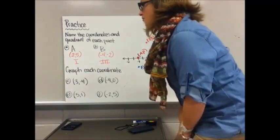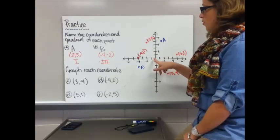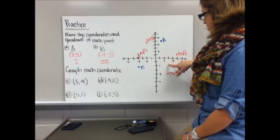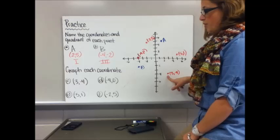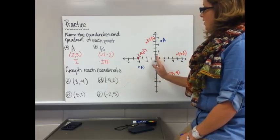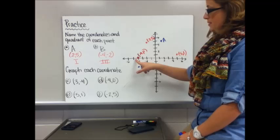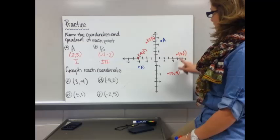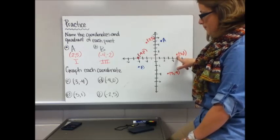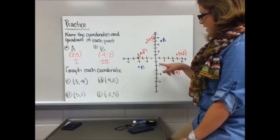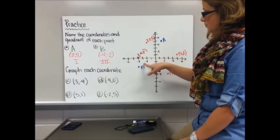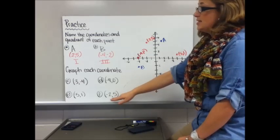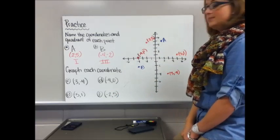To graph each coordinate, three, negative four, remember you're always starting at the origin, so over three, one, two, three, and down four, one, two, three, four, at three, negative four. For negative four, zero, you're going left four and there's no vertical change for zero, so it lies on the x-axis. For five, one, you're going five right and up one and it lands in the first quadrant. And F is negative two, negative five, so you go left two and up five. There it is. I may have said negative two, negative five. That is negative two, positive five, which is why it goes up there.